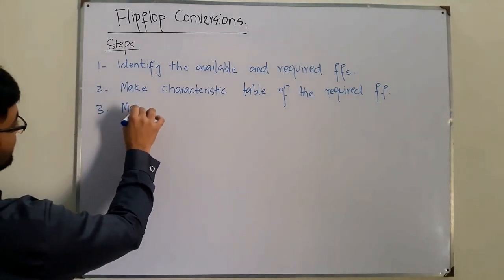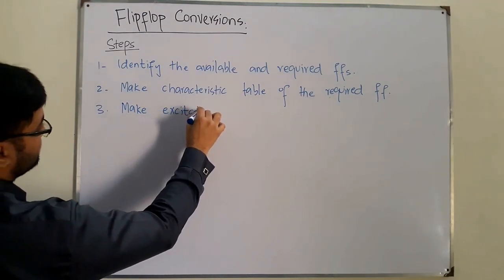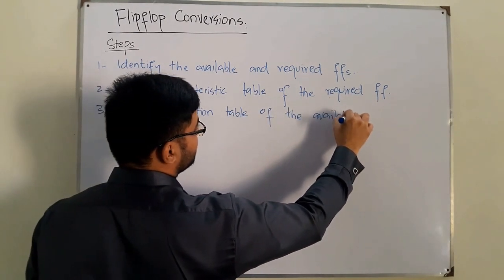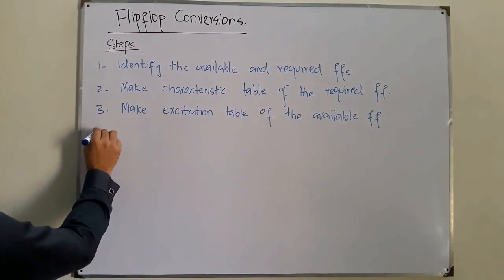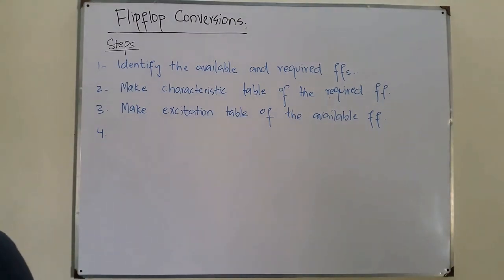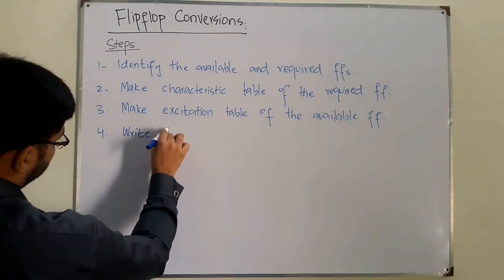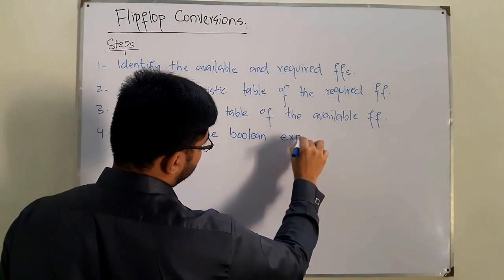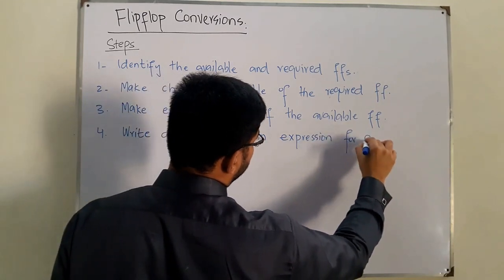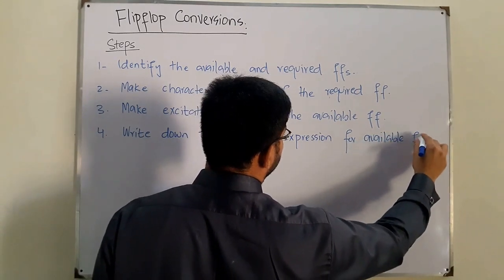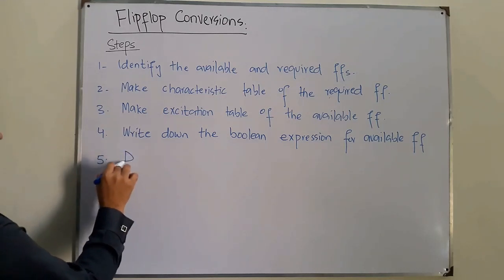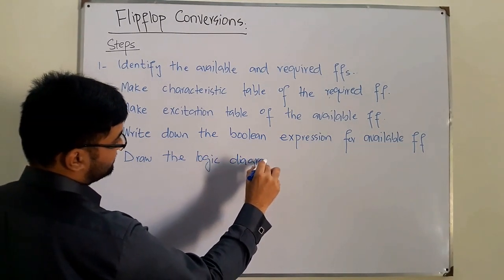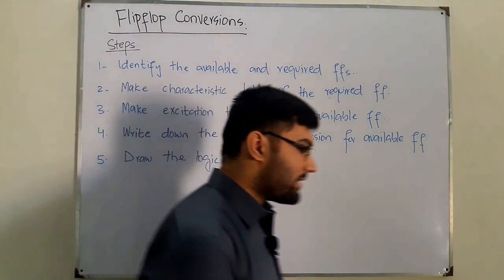The third step is to make the excitation table of the available flip-flop. The fourth step is to write down the Boolean expression for the available flip-flop. And finally, the fifth step is to draw the logic diagram.